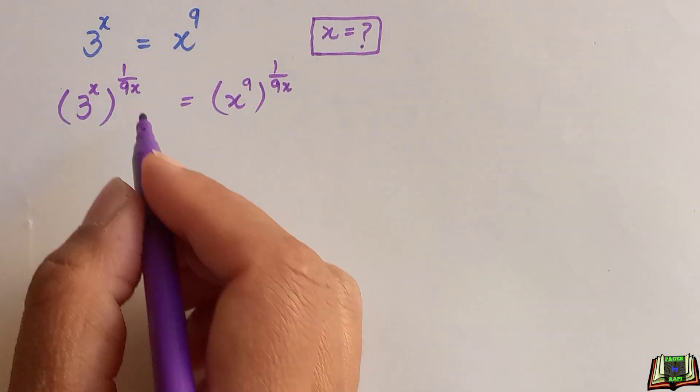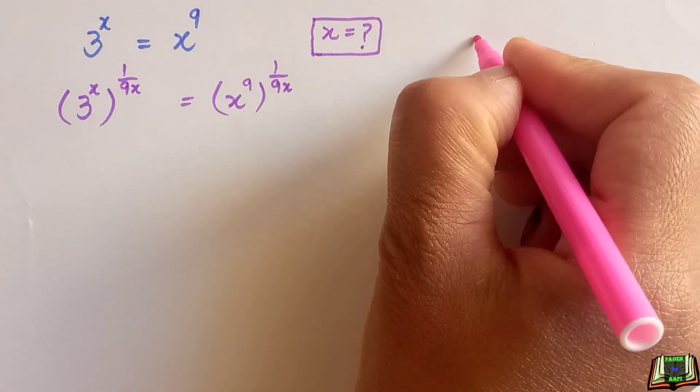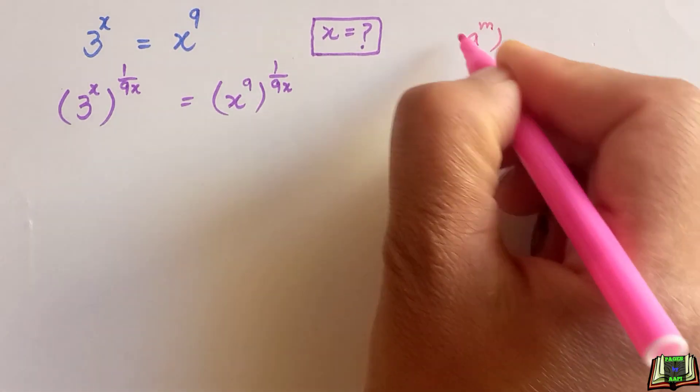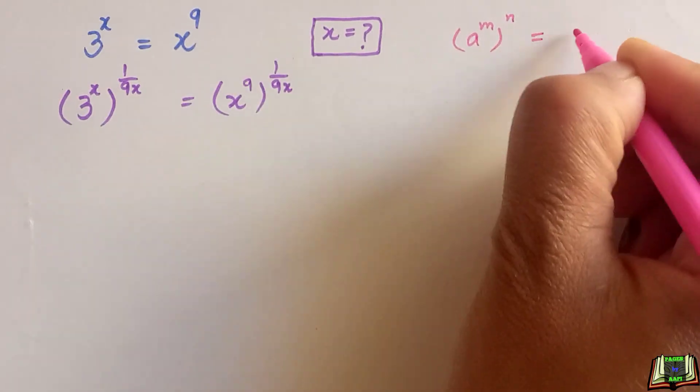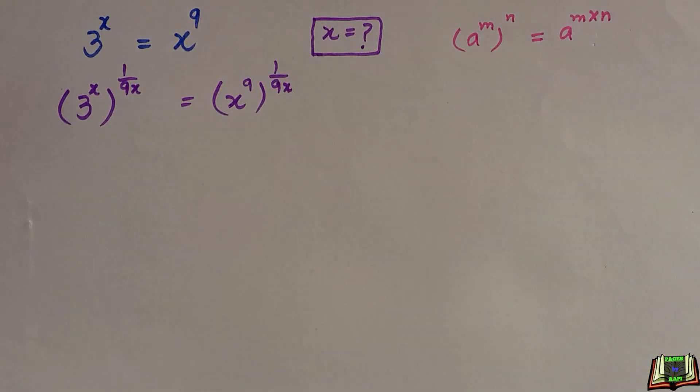Here we are going to use power of a power rule that says if a raised to power m raised to power n means nested powers, then we can multiply these two powers: a raised to power m times n.